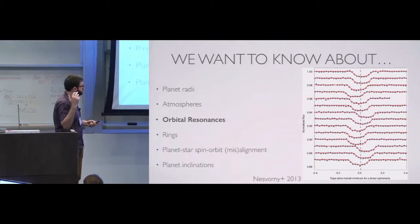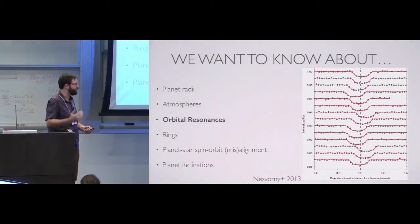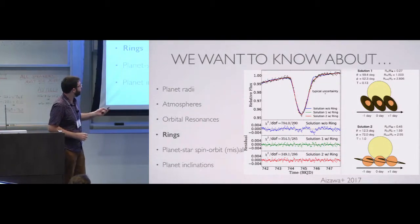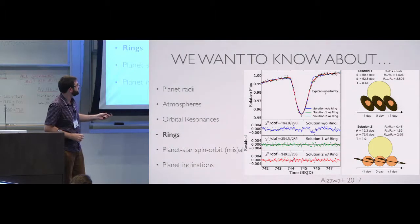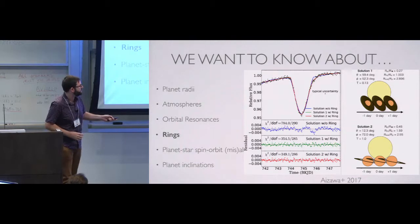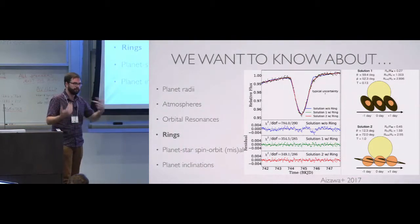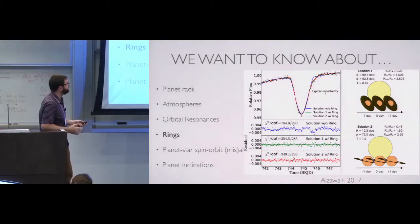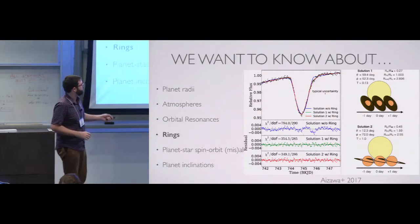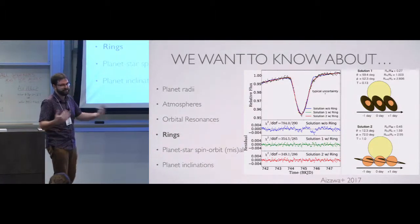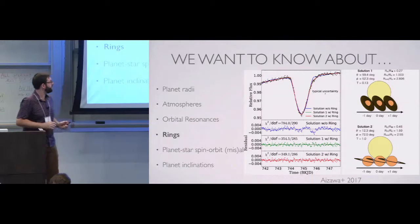Rings — I gave microlensing a hard time for not finding any rings. We haven't found any either, but we have a candidate. This is a paper that just came out a couple weeks ago with this funny-looking transit where it comes in very quickly and then very slowly leaves transit. The hypothesis is that it looks like a planet with a ring around it. It's kind of obvious how a ring appears in a transit — it blocks light. But if the ring is inclined like this, it very quickly enters the transit and slowly leaves, so you get this non-perfectly U-shaped transit.